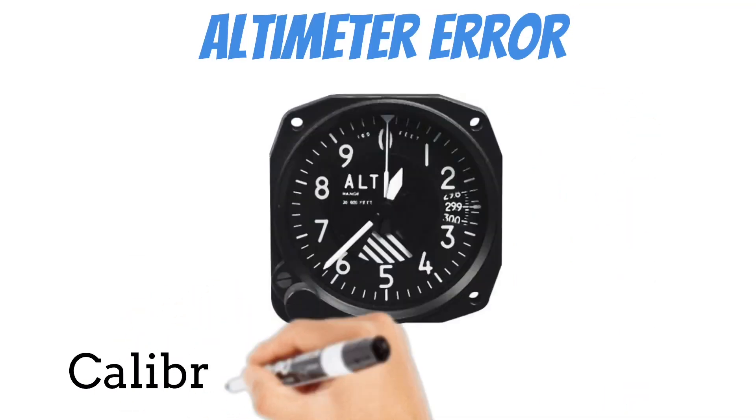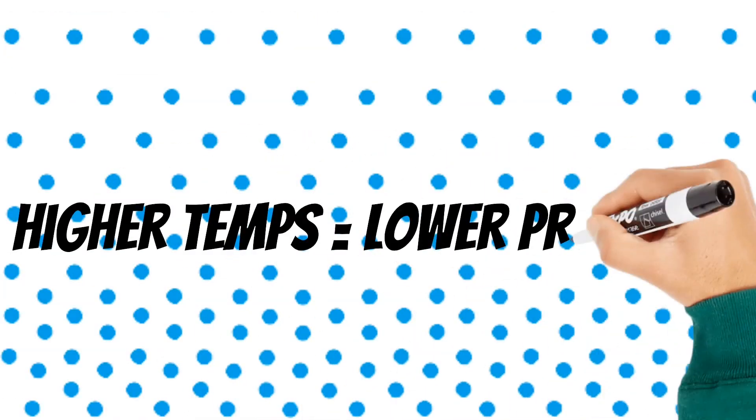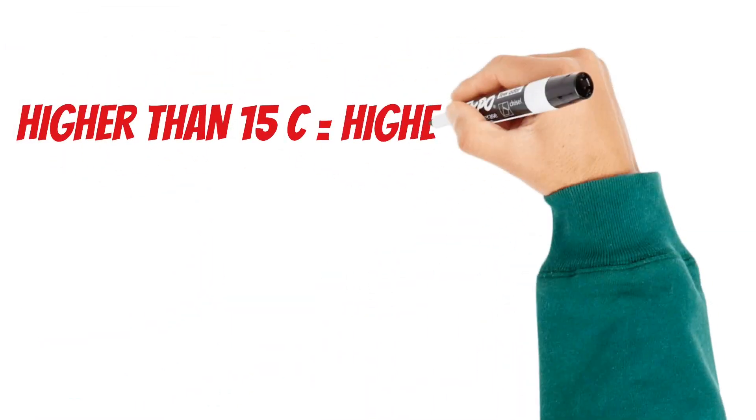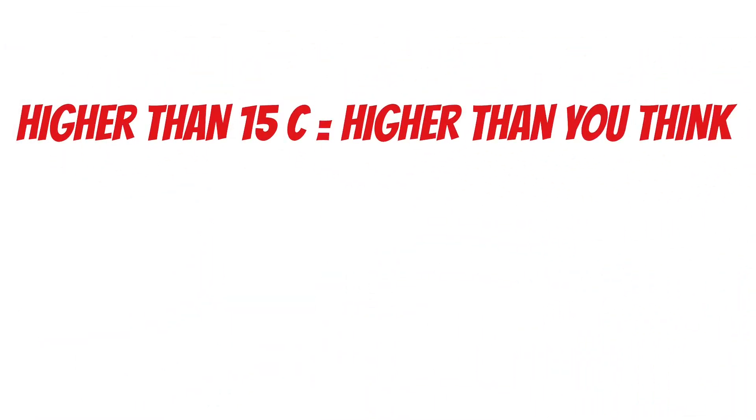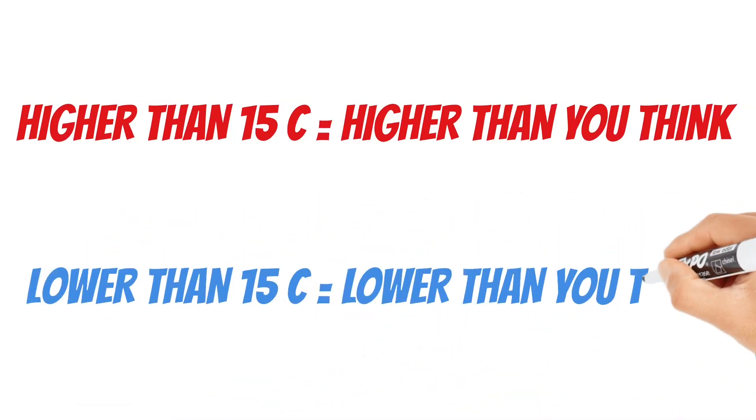Your altimeter is calibrated to 15 degrees Celsius. That's about 59 degrees Fahrenheit. And there's no way to account for these temperature changes on your altimeter. That's why it's so hard to get your true altitude to match your indicated altitude. So that means at temperatures above 15 degrees Celsius, you'll have lower air pressure. Which means that at temperatures higher than 15 degrees Celsius, you'll be higher than you think. At temperatures lower than 15 degrees Celsius, you'll be lower than you think.